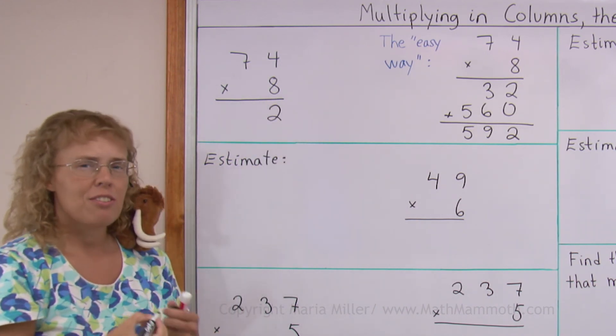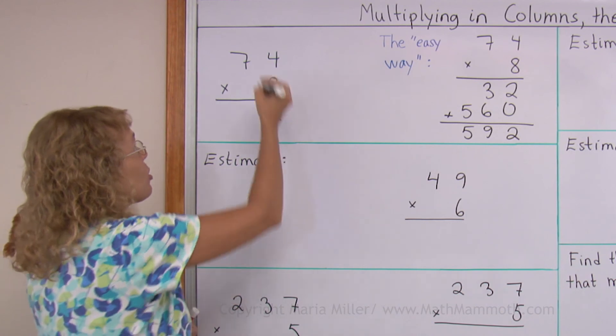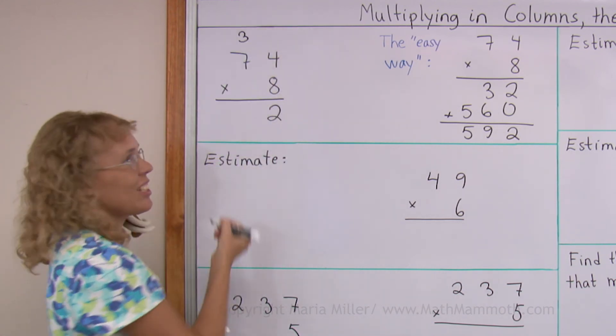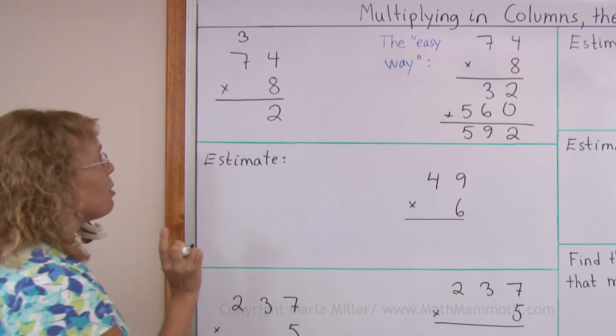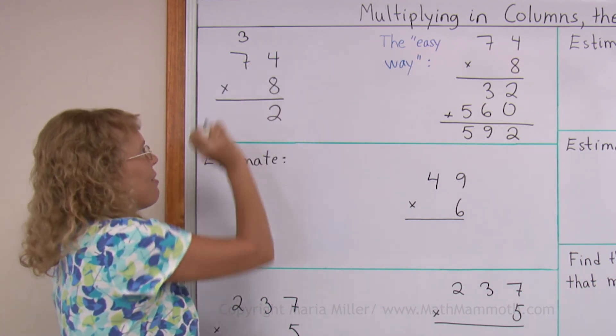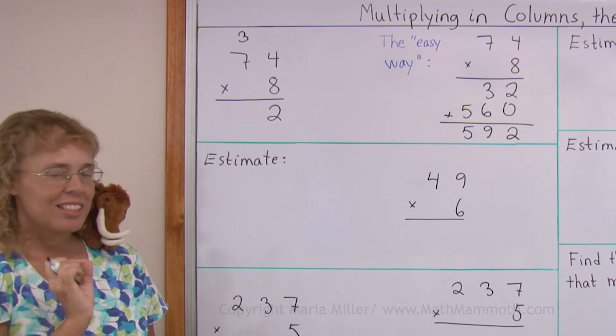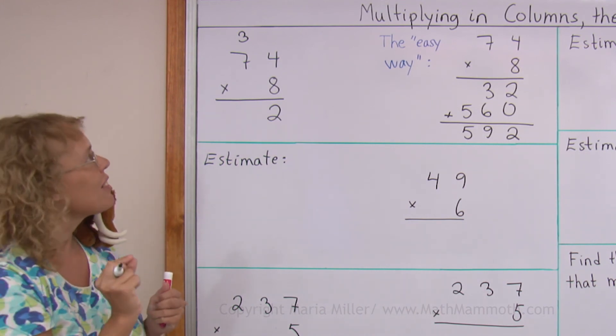And the 30, the 3 tens, are regrouped over there in the tens column. So there is 3 tens waiting for us. But now we will multiply the tens. 8 times 7, which is 8 times 70. We know it means 8 times 70.